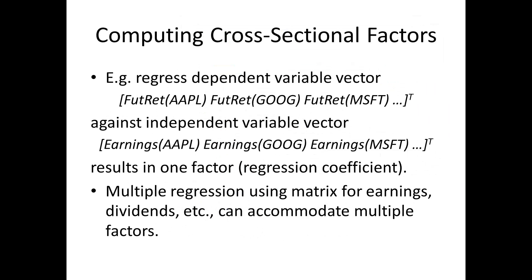To illustrate: you have a factor which is the dependent variable vector consisting of the future return of every stock in your universe — Apple, Google, Microsoft. The independent variable vector would be the particular factor you're interested in, maybe earnings or dividend yield for each stock. You regress them to find the linear relationship between earnings and future return. You can use multiple factors to run multiple regression — one might be earnings, another dividend yield — creating a multi-factor model where all factors are combined using the appropriate regression coefficients.